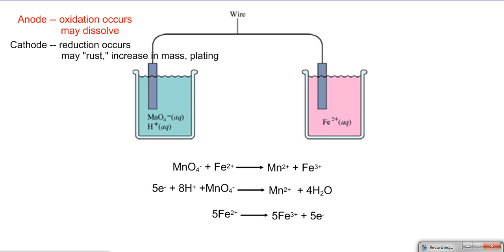So these are two half reactions. I see that the manganese is being reduced, going from plus seven to two plus, so since it's being reduced that means that it's my cathode.